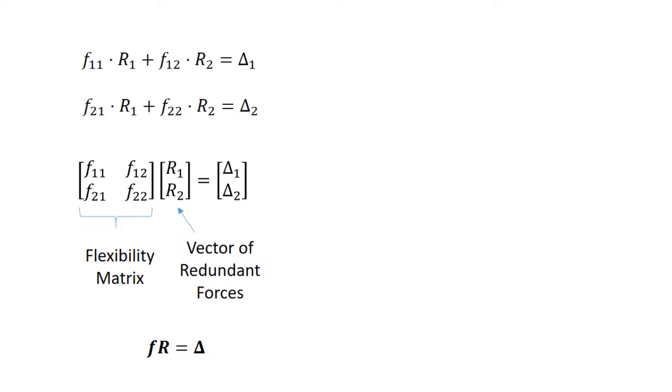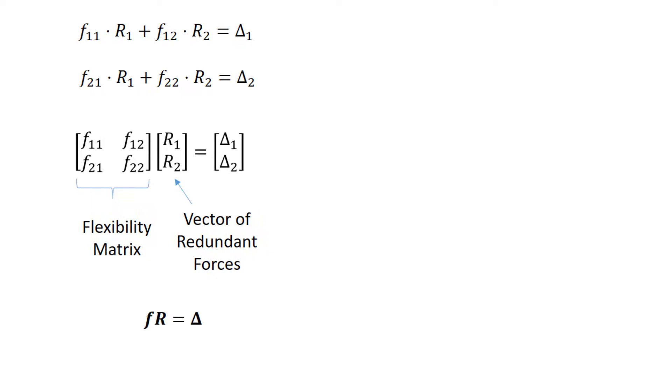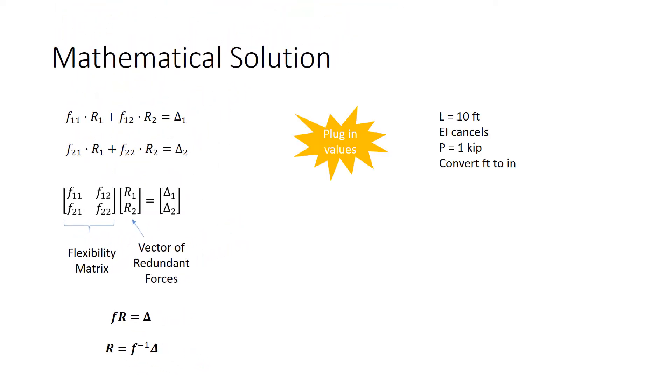Symbolically, we can call the matrix F, lowercase f. We can call the vector of redundant forces capital R, and we can call the delta vector delta, although these are bolded to indicate that they're vector or matrix quantities. And we can solve for R by multiplying each side by the inverse of F to obtain R is equal to F inverse delta. Let's now proceed to solve this numerically.